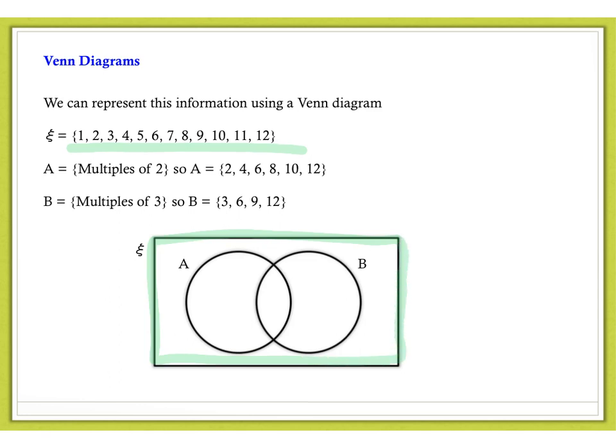And, of course, we have two overlapping circles, which represent the subsets A and B. The symbol here, psi, shows us that everything within our universal set is contained within this Venn diagram.